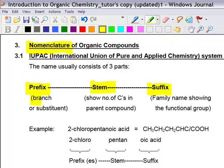The prefix is the branch or substituent, while the stem shows the number of carbons in the parent compound. And the suffix shows the family name showing the functional group.